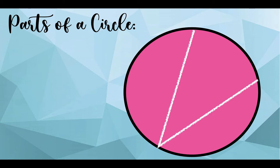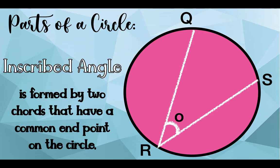While this one, angle QRS is what we call inscribed angle. It is formed by two chords that have a common endpoint on the circle. Their common endpoint is point R.